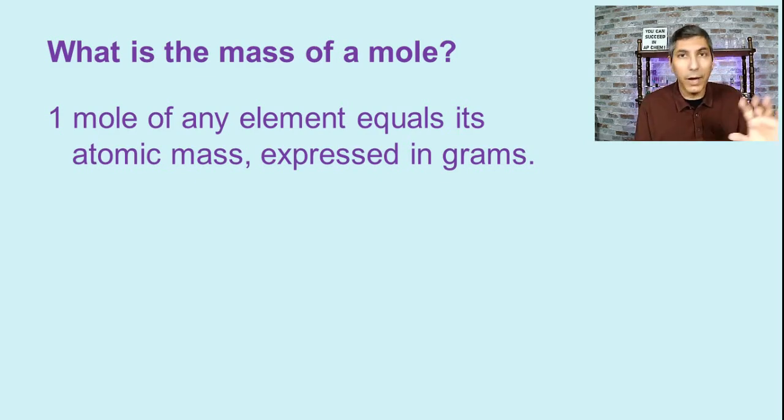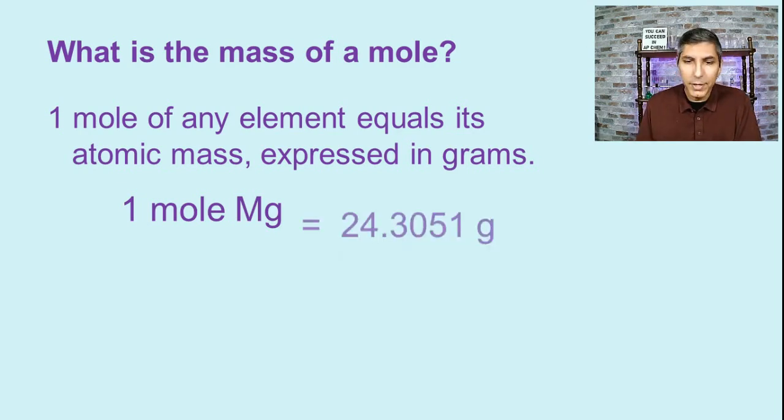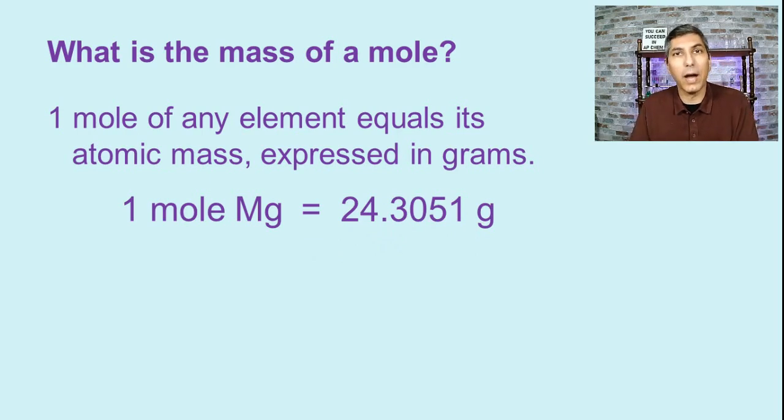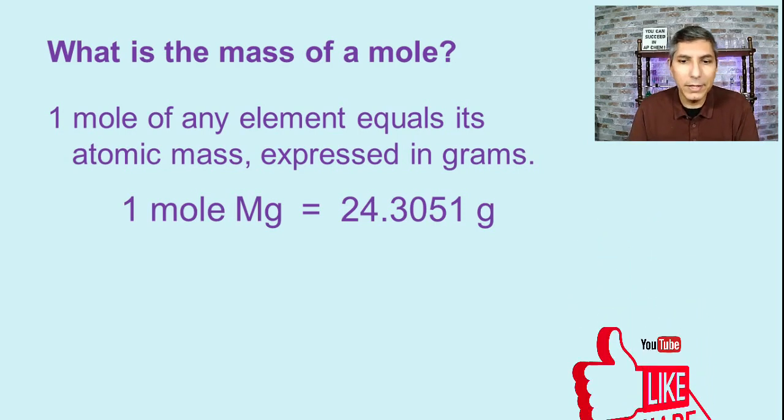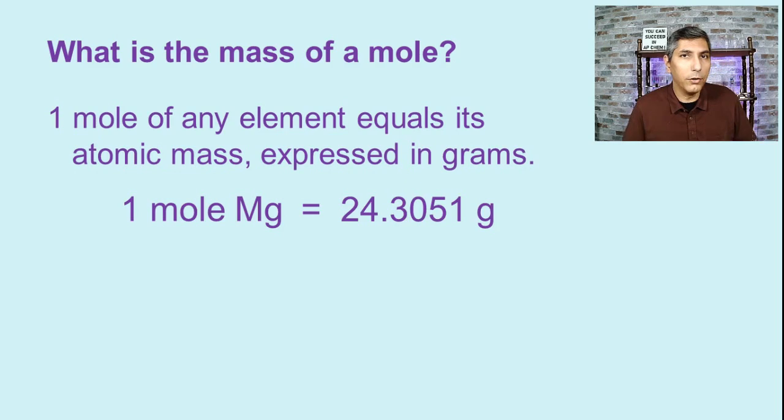If you look at the periodic table, you can find that element and then look at the decimal number there. That's the atomic mass. For example, if you look at magnesium, Mg, one mole of magnesium is going to be equal to 24.3051 grams because 24.3051 is the atomic mass of magnesium. That means you can weigh out 24.3051 grams of magnesium and then point to that and say, that is one mole of magnesium atoms. That's 6.02 times 10 to the 23rd atoms of magnesium in that little sample. That's called counting by weighing.